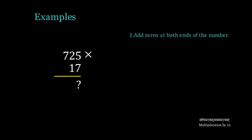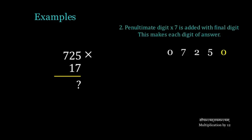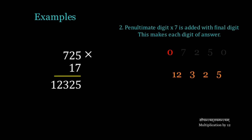725 multiplied by 17. Adding zeros at both ends, we get 0, 7, 2, 5, 0. Now, 5 multiplied by 7 is 35 — we write 5 and carry 3. 2 multiplied by 7 is 14, plus 5 is 19, plus 3 is 22 — we write 2 and carry 2. 7 multiplied by 7 is 49, plus 2 is 51, plus 2 is 53 — we write 3 and carry 5. Then 7 plus the carried 5, we get 12. So the answer of 725 multiplied by 17 is 12,325.